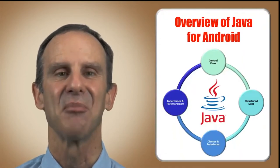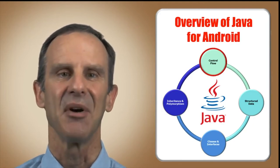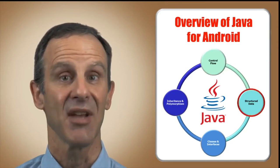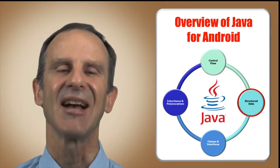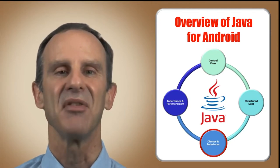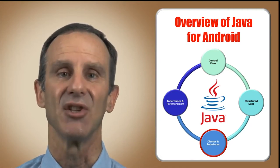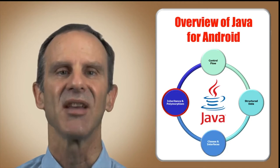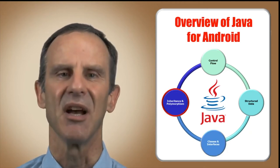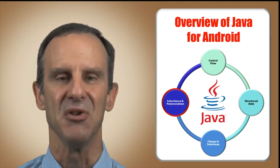Hi, I'm Jerry Roth. In this MOOC, we'll cover key object-oriented features that are supported by the Java programming language. These Java features enhance the clarity of an app by controlling its flow of execution, enhance app utility by enabling access to structured data, enhance app modularity by grouping related methods and fields into classes and interfaces, and enhance app extensibility by transparently customizing the behavior of existing classes via inheritance and polymorphism.